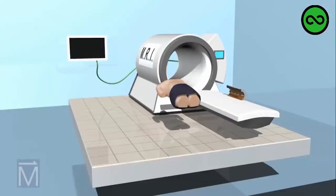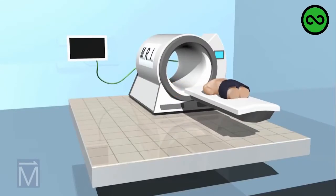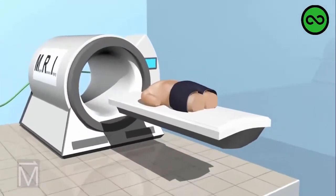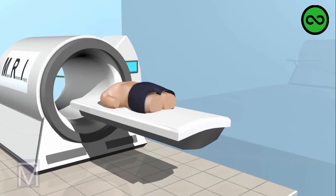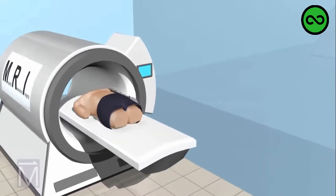Normally, these hydrogen protons spin about willy-nilly on randomly oriented axes. Put them inside an MRI machine, however, and things change.